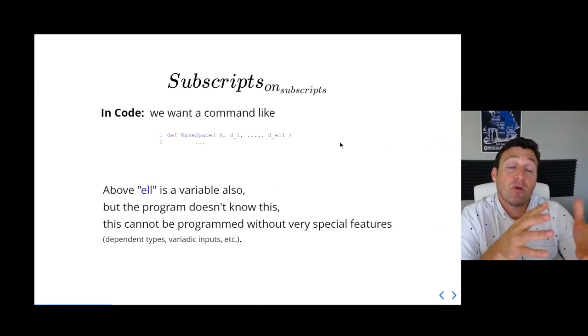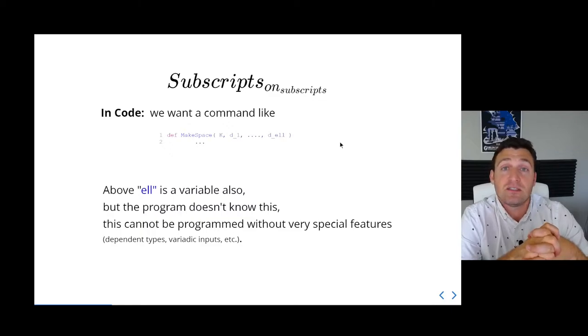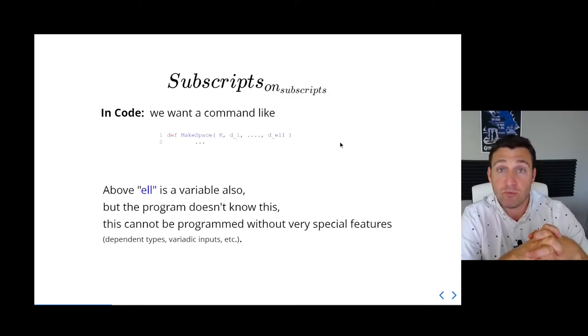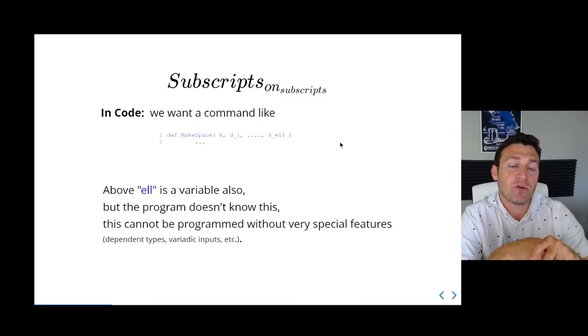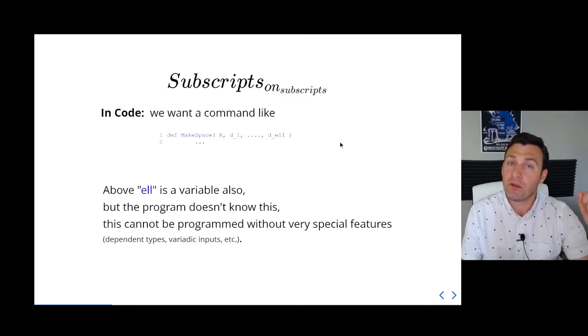If we move to code you'll see immediately you can't program this. We're defining a function called make space that's going to take in a parameter k, the field we want to build a vector space over, and then a bunch of different dimensions. What I want to point out is that we're thinking of this input as requiring multiple dimensions, d1 through dl, but that l could vary as we move through the program. Different users will have different number of legs on their tensors for example. With that extension it's difficult to see how to program this. Some programming languages do have special tools to help us with this, such as variadic inputs and dependent types. This is not a natural thing to sit down and write a program for. And that's a hint that perhaps the mathematical use of this type of notation is also a bit fractured.